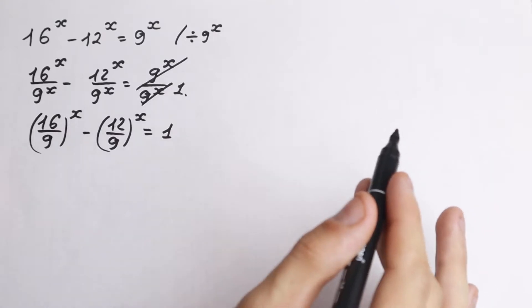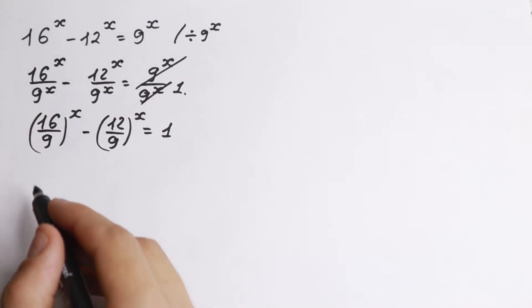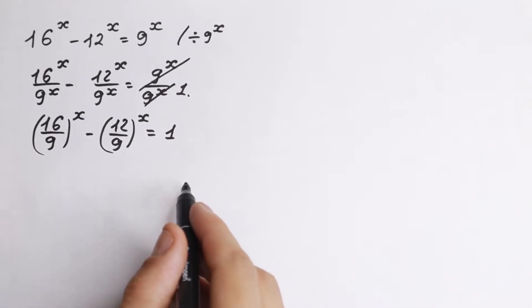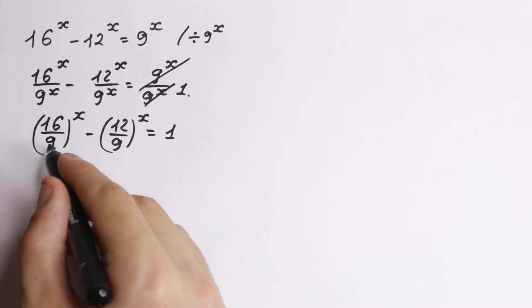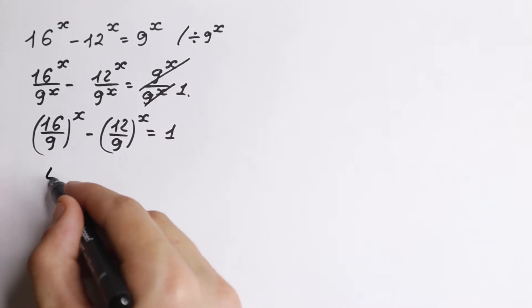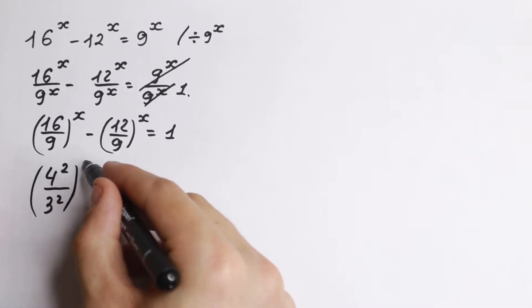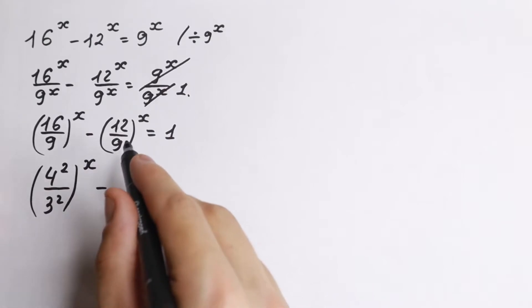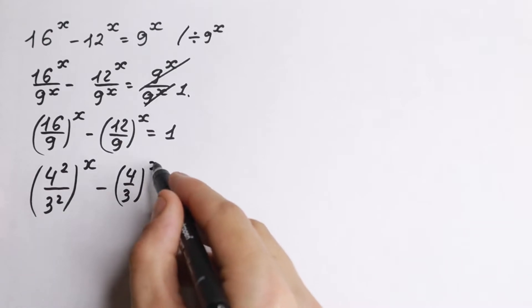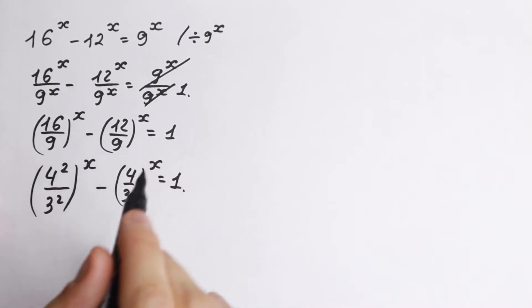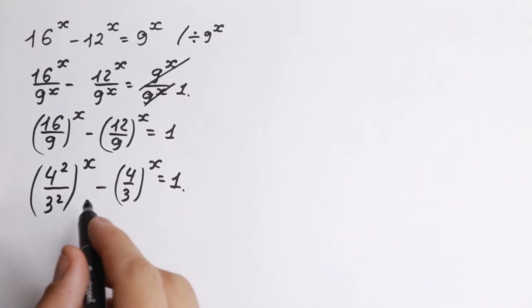A lot of students ask me why I do this, because right now we have fractions, not nice integers. I tell them there is a really interesting moment here, because 16 over 9 — we can write 16 as 4 squared and 9 as 3 squared, all raised to the power x. Then dividing 12 over 9 by 3 gives us 4 over 3 to the power x, equal to 1. And now a lot of students see what I meant.